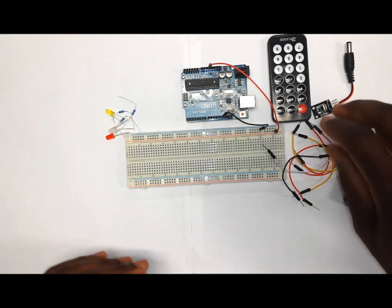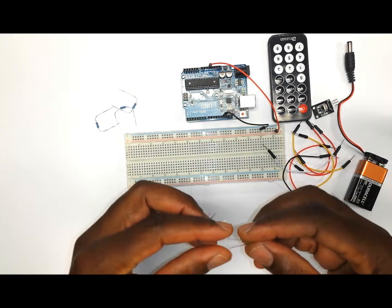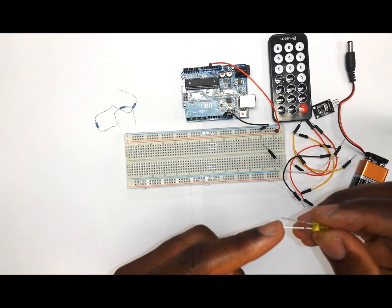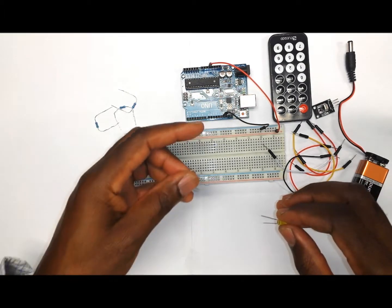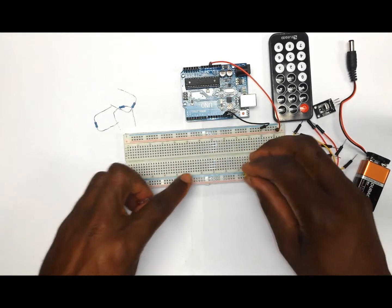So the next thing that we want to do is to put our LEDs onto the breadboard. Just bear in mind that the negative part or the shorter leg of the LED will go into the negative rail of the breadboard. So we are going to put it like this.